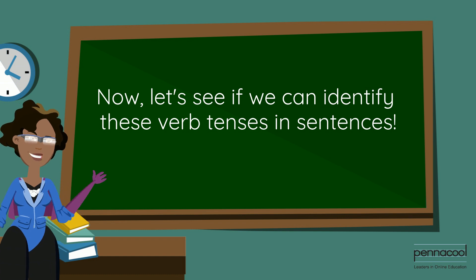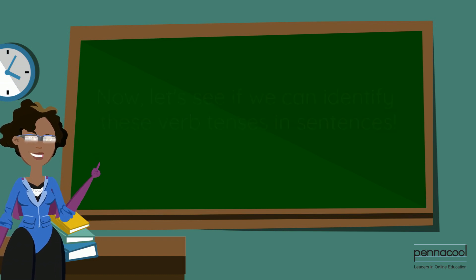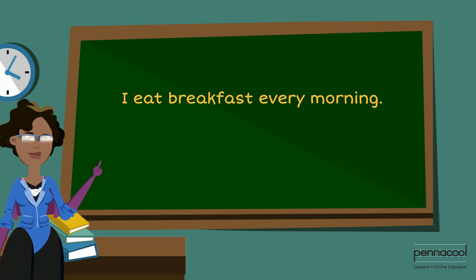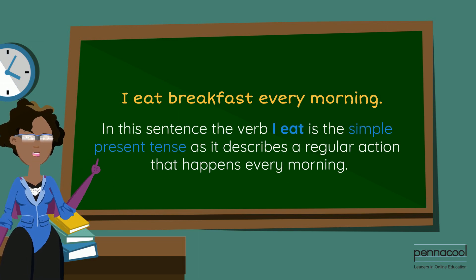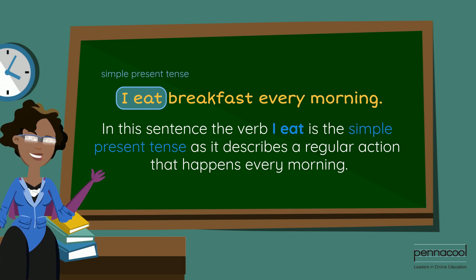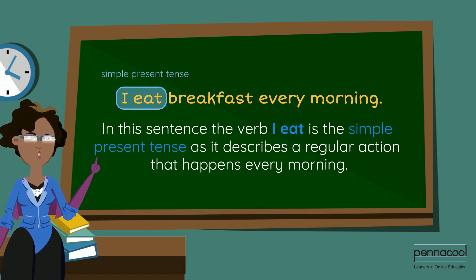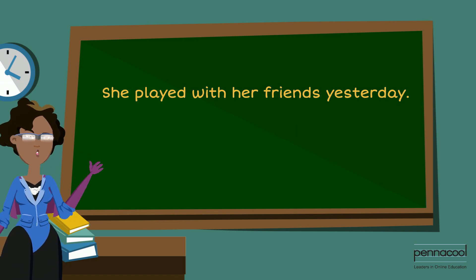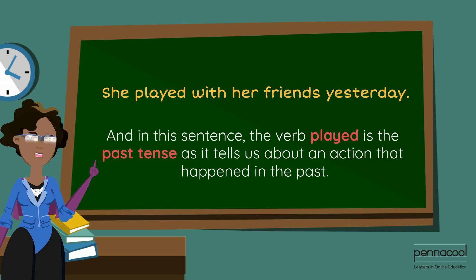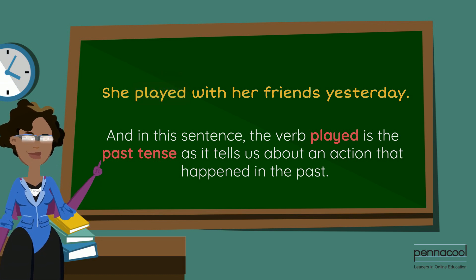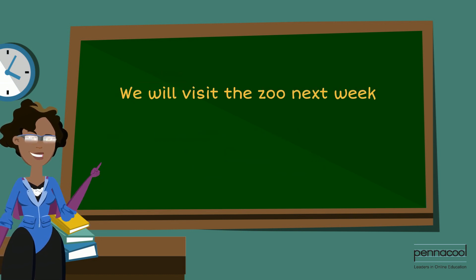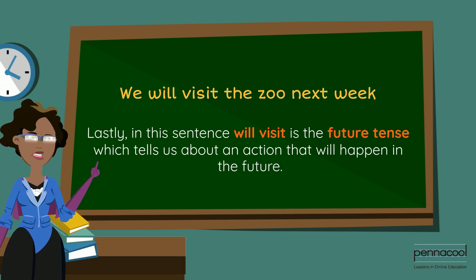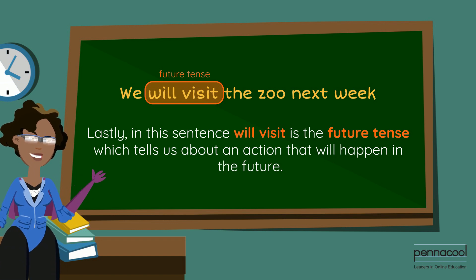Now let's see if we can identify these verb tenses in sentences. 'I eat breakfast every morning.' The verb 'eat' is a simple present tense as it describes a regular action that happens every morning. 'She played with her friends yesterday.' The verb 'played' is the past tense as it tells us about an action that happened in the past. 'We will visit the zoo next week.' The phrase 'will visit' is a future tense, which tells us about an action that will happen in the future.